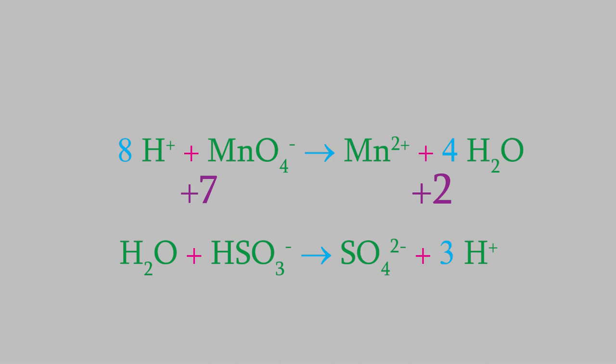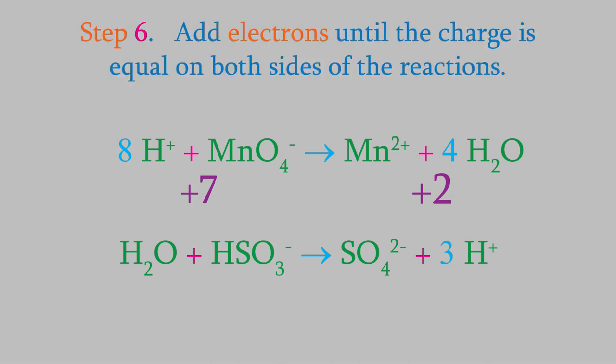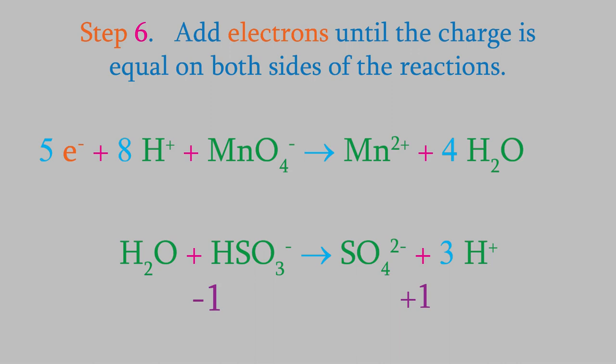That brings us to step six: if the charges on each side of a half-reaction don't match, we add electrons to one side of the reaction until the charges are balanced. Electrons have a charge of negative one, so in this example, we'll add five electrons to the left side — now the charge is plus two on both sides. Next, we'll do the same for the oxidation reaction. There's a charge of minus one overall on the left side, and on the right side there's a sulfate ion and three H+ ions, for a total of plus one. To balance out the charges, we need to add two electrons on the right, giving a charge of minus one on both sides.